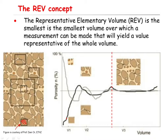Now, if you place the same window somewhere else, for example here, you will get a different value for the porosity. In this particular case, you will get a higher value for the porosity, because most of this region is covered by the void space, so you will be somewhere here on this curve. This means the size of this sampling window is not large enough to represent the entire sample.